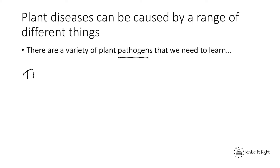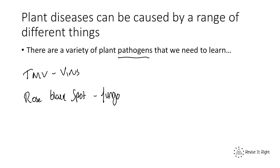We've got tobacco mosaic virus, which is of course a virus, and this causes mosaic patterns on the leaves of plants. We've also got rose black spot, which is a fungal disease. So there are a variety of different plant pathogens — for example tobacco mosaic virus and rose black spot. For more information go back to our communicable disease video.